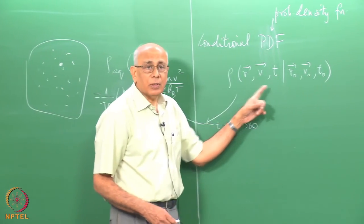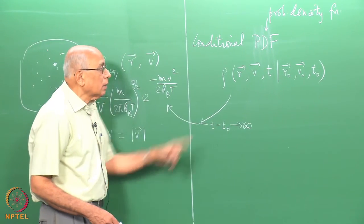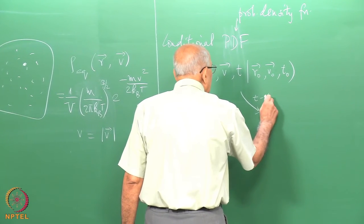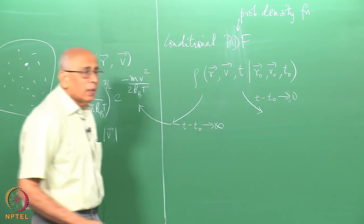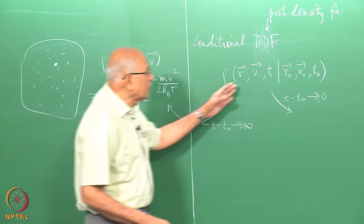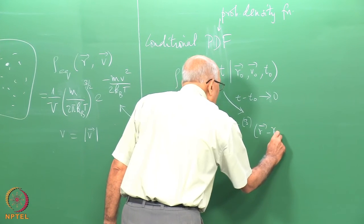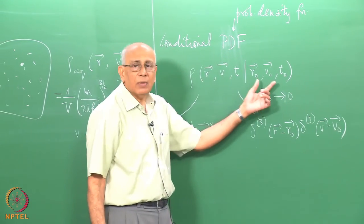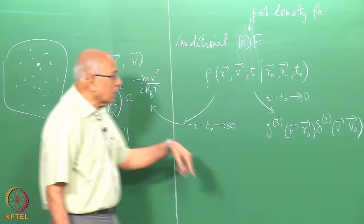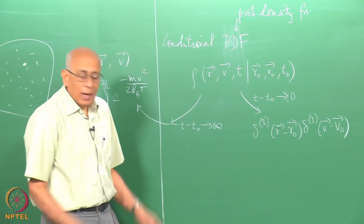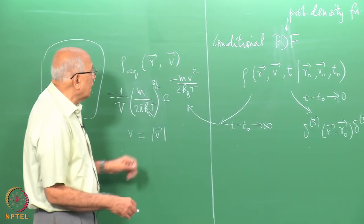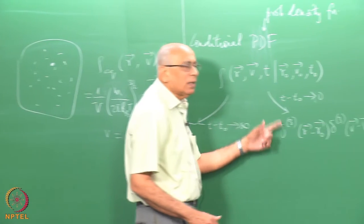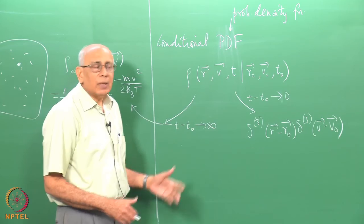The hard question is: how does this function reach equilibrium as a function of t? I know its value at t equal to t_0: it is obviously delta^3(r − r_0) delta^3(v − v_0), because at time t_0 the values are deterministic. So it starts off as a very spiked delta function distribution and broadens out. It becomes uniform in space and in velocity it becomes Maxwellian with mean velocity zero. I know the initial condition and the limiting distribution, but I do not know what it is in between.